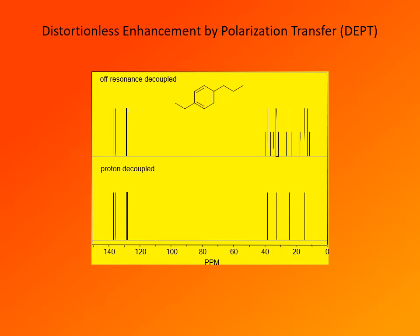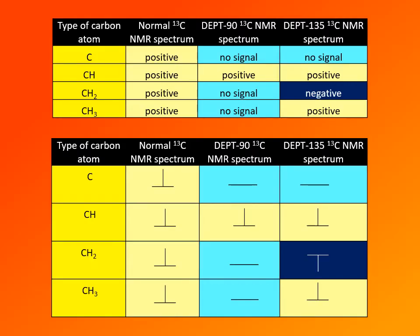That technique is called DEPT — Distortionless Enhancement by Polarization Transfer. The DEPT technique is used to accurately determine the number of protons attached to each carbon. It relies on recording three carbon-13 NMR spectra: a normal carbon-13 NMR spectrum, then a DEPT-90 and a DEPT-135 carbon-13 NMR spectrum.